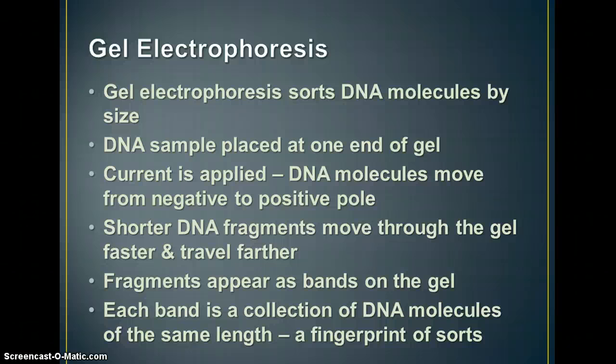The DNA molecules have negatively charged phosphate groups on them. And so they're going to be repelled by the negative electrode of the tank and attracted to the positive end. So when you put the current through there, the DNA will flow from the negative to the positive.